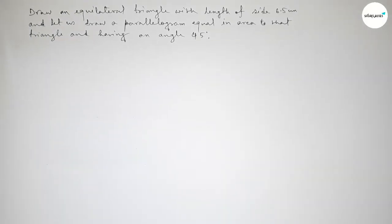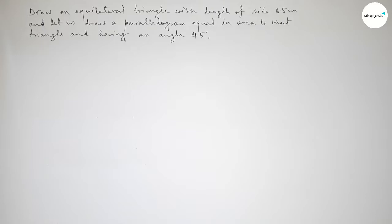Hi everyone, welcome to Sister Classes. Today in this video we have to first construct an equilateral triangle with length of each side 6.5 centimeters, then draw a parallelogram equal in area to that triangle and having an angle of 45 degrees. So let's start the video.